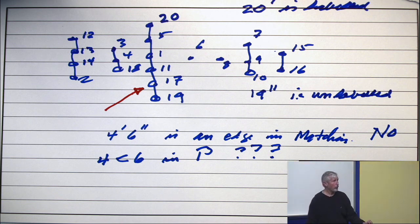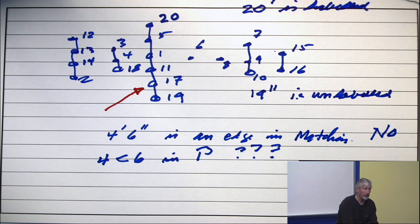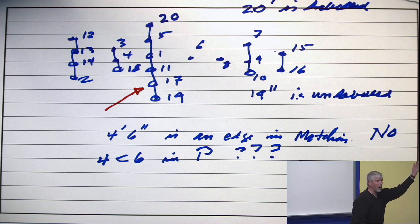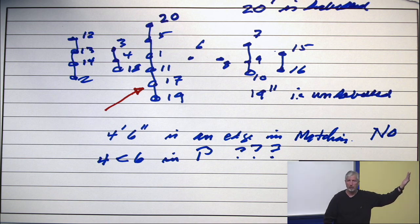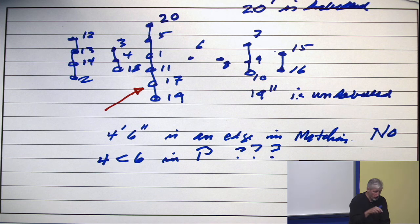If there was, there would have to be flow into 19 double prime. That would be a matching edge into 19, but there isn't, because that would mean there's somebody under 19 in the chain partition. So that edge is empty. If you could label this guy, you'd label the sink. You can't. So this guy's not labeled.